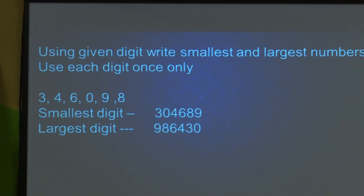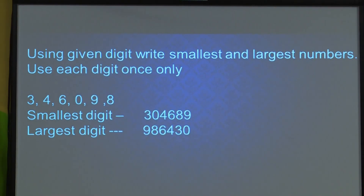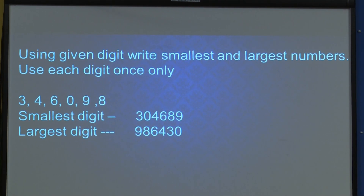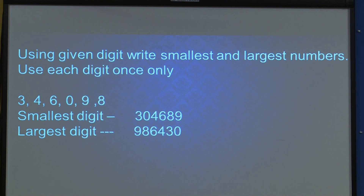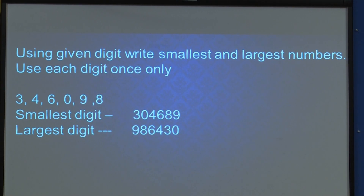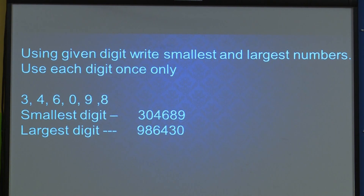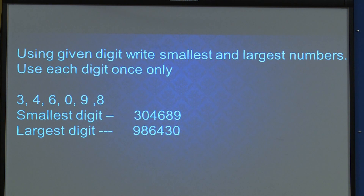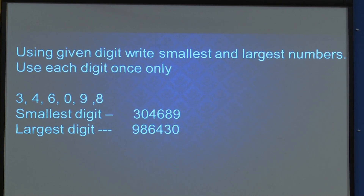Now, using given digits, write the smallest and largest numbers — use each digit once. The digits given are 3, 4, 6, 0, 9, and 8. For the smallest number: 0 cannot come first because we have to start with a natural number. So 3 is the smallest natural number here, then 0, then 4, then 6, then 8, and 9.